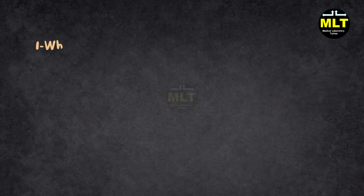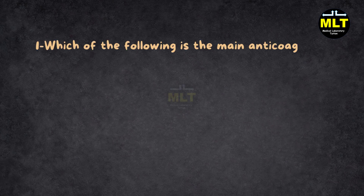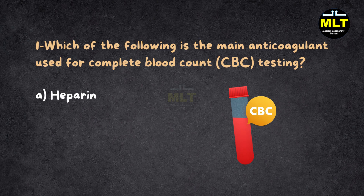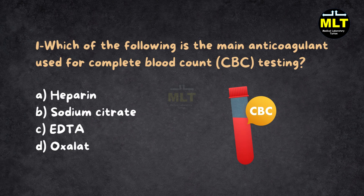MCQ 1. Which of the following is the main anticoagulant used for complete blood count testing? A. Heparin. B. Sodium citrate. C. EDTA. D. Oxalate.